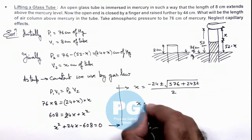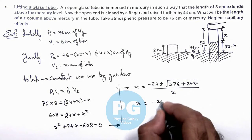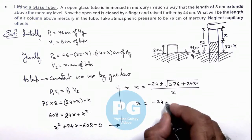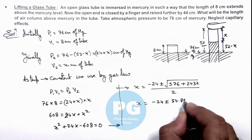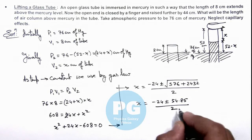On simplifying, the value of x is minus 24. After simplifying the discriminant we get 54.85, divided by 2.